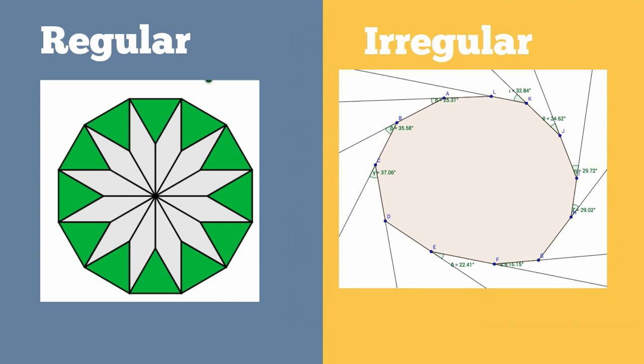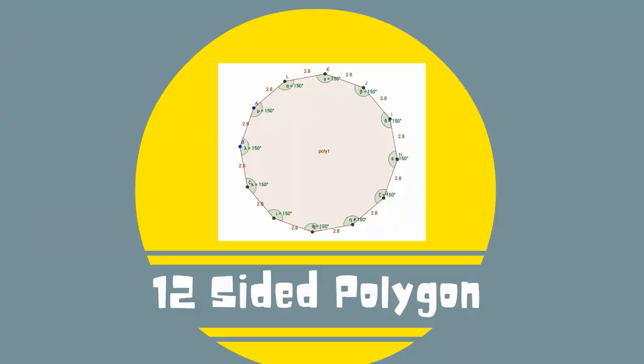Dodecagons can also be irregular, which means the shape does not have equal sides or angles. So there we go, a 12-sided polygon, a dodecagon.